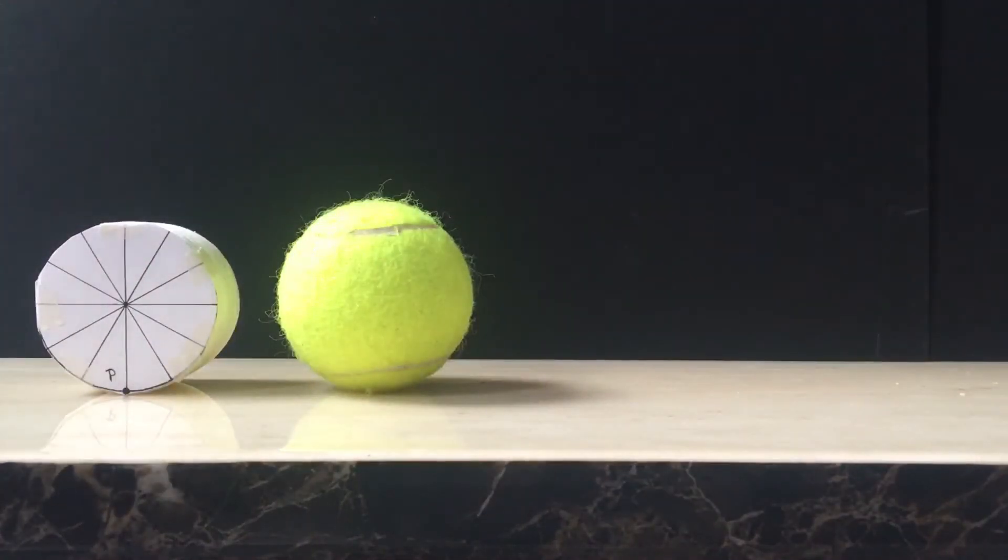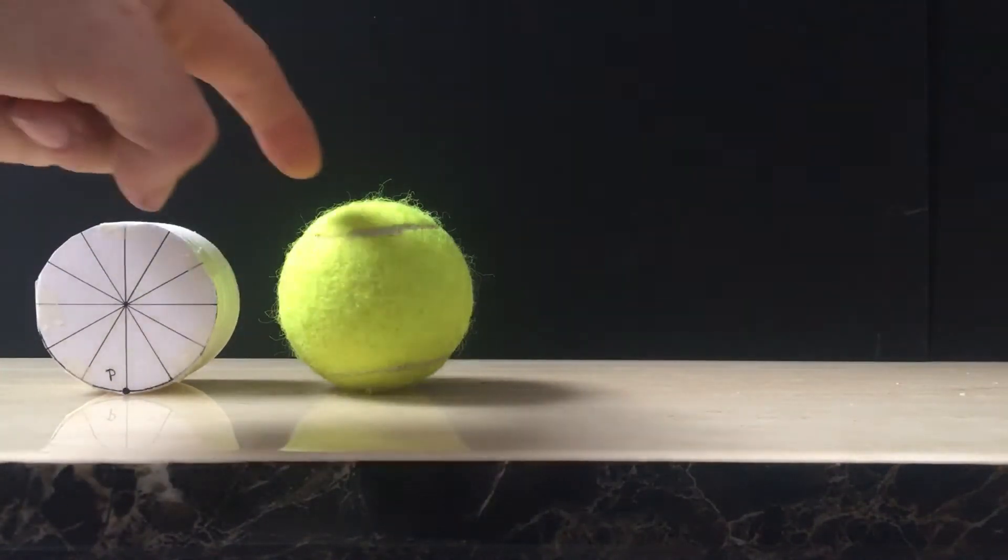took this ball and rolled it along a fixed line, if we picked any point on the tennis ball and followed it as it rolled along that line, it would show us the locus that it creates.